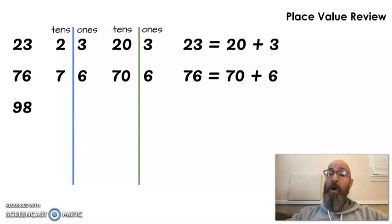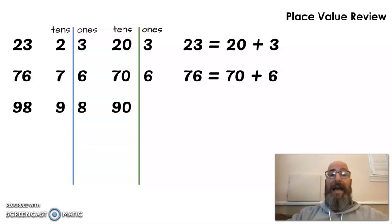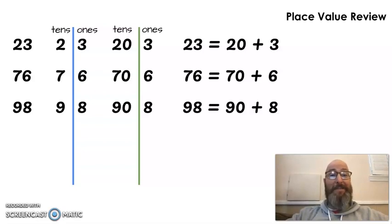98. If I draw a line between that, what do I get? How many tens? 9. And how many ones? 8. And how much is 9 tens worth? Do you remember? Count by tens 9 times. Did you get 90? I bet you did. And 8 ones, of course, equals 8, which means that 98 equals 90 plus 8.